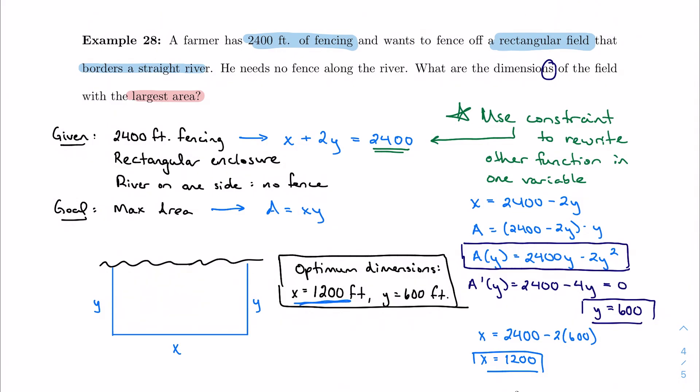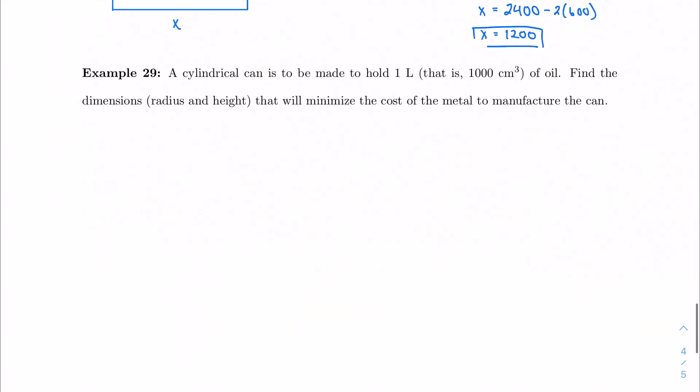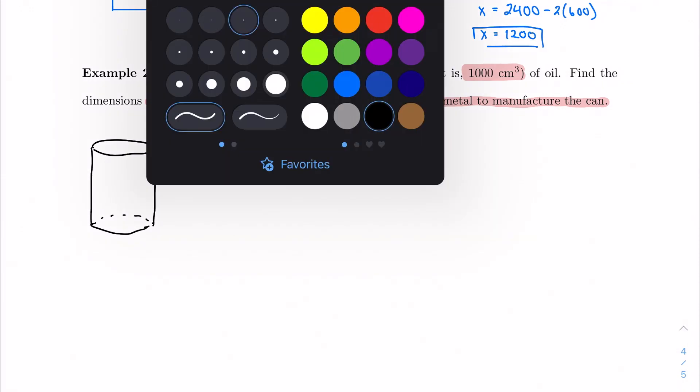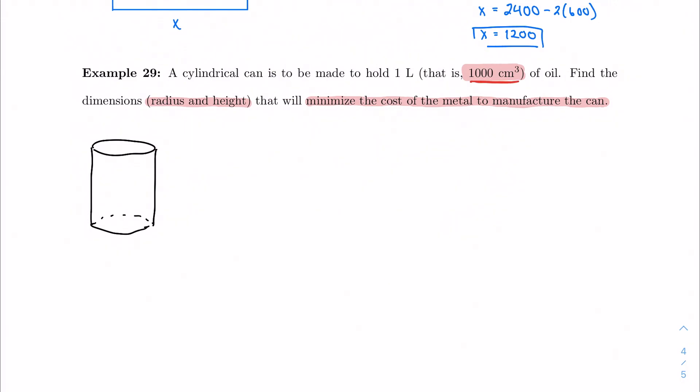I want to take a look at one more problem with this. A cylindrical can is to be made to hold one liter, which is the same as 1000 cubic centimeters, that's going to be important later, of oil. Find the dimensions, so the radius and the height, that will minimize the cost of the metal to manufacture the can. Let's draw a picture first. We have a cylindrical can. And it is made to hold 1000 cubic centimeters of oil. So I'm making this switch because eventually we're going to talk about radius and height. And those need to be expressed in centimeters, which I can't do with liters. So this is actually the accepted conversion.